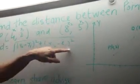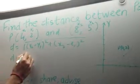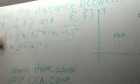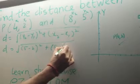And if we substitute these values in this formula, we get y2 which is 5 minus y1 which is 2 whole square plus x2 which is 8 minus x1 which is 4 whole square.